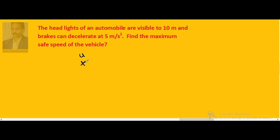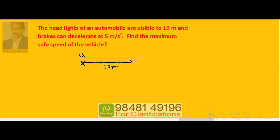In 10 meter distance it has to come to rest, otherwise there is a possibility for accident because automobile lights are visible up to 10 meter distance only. The maximum deceleration the vehicle has is 5 meters per second squared.